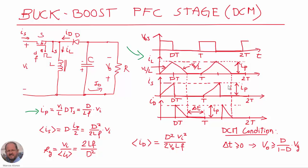From these waveforms we can get the peak value of the current ip, which is the peak value of the different triangular waveforms. As we have seen in previous videos, in order to model our converter we need to calculate the average current through the switch and the average current through the diode. The average current circulating through the switch is obtained with this expression here.